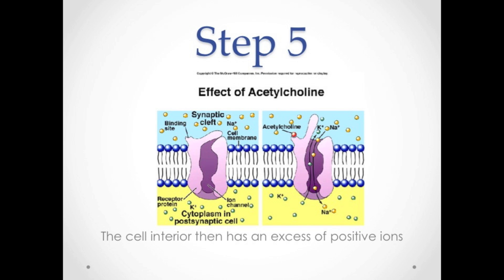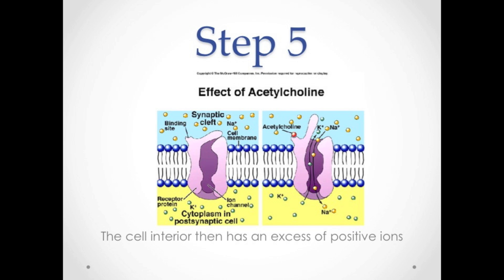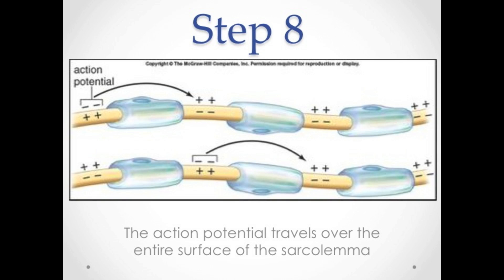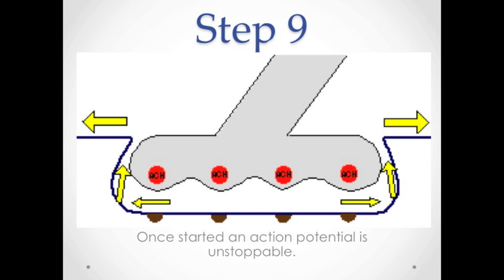When the sodium ions are allowed inside the muscle cell, the cell interior itself becomes positively charged because of the excess of positive ions. This change in the electrical condition of the muscle cell is what allows muscle contraction to take place. Once the electrical condition changes inside the cell, it causes an electrical current throughout the muscle cell known as action potential. The action potential then moves over the entire surface of the sarcolemma, and once the action potential starts, it is unstoppable.